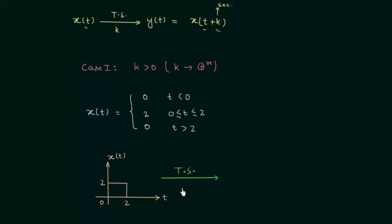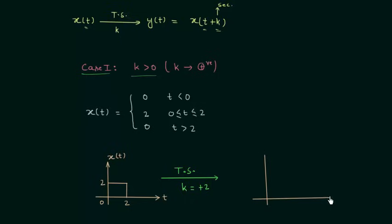We will perform the time shifting with k equal to plus 2. As k is equal to plus 2, we will find out the new signal y(t). y(t) is simply equal to x(t + 2) because k is equal to 2. We will first see one example to understand how to perform the time shifting.